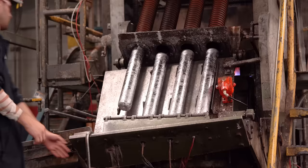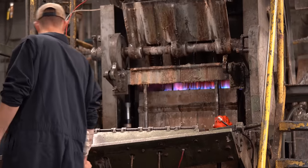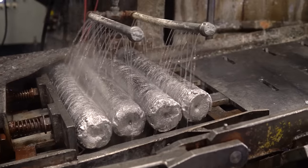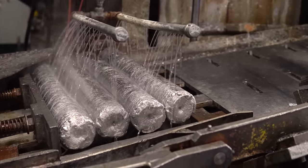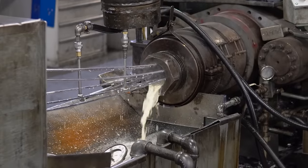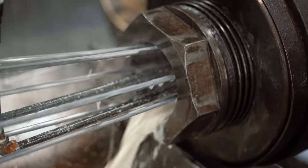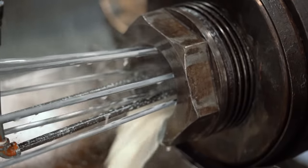To make the bullets, raw lead is melted and formed into cylindrical billets. The billets are extruded and drawn into wire and wound into coils. The wire is roughly the same diameter as the finished bullet.